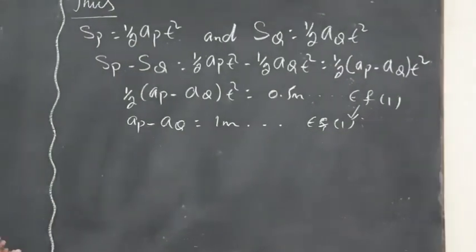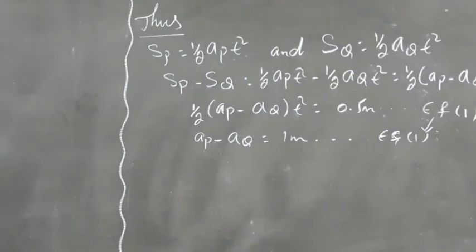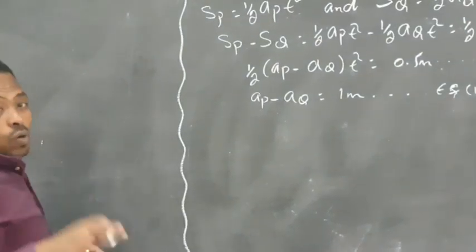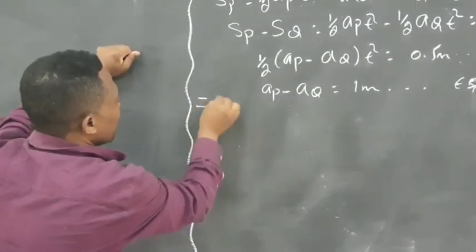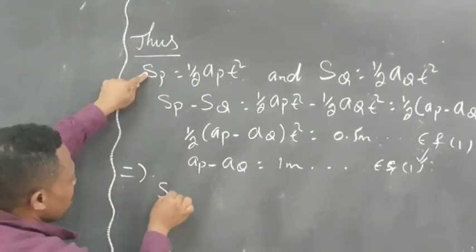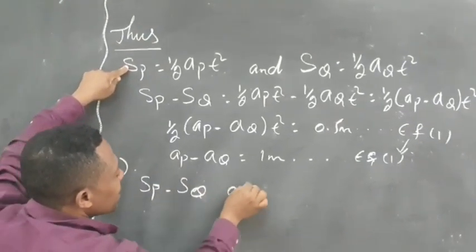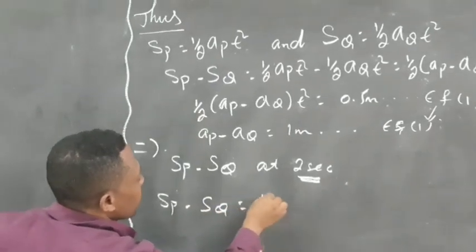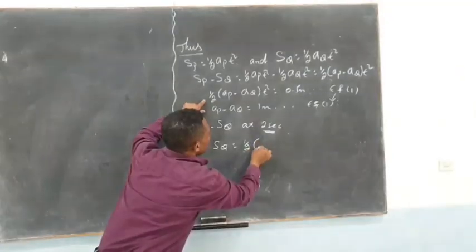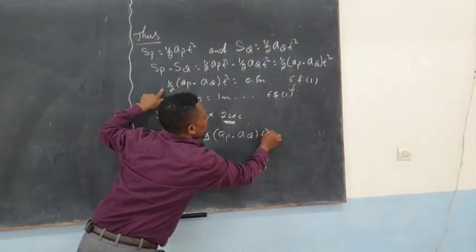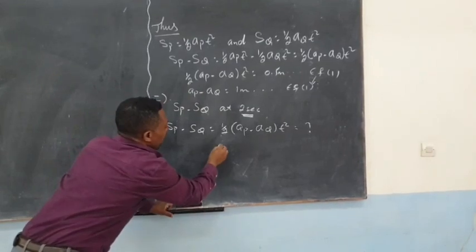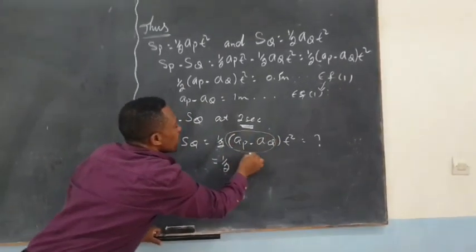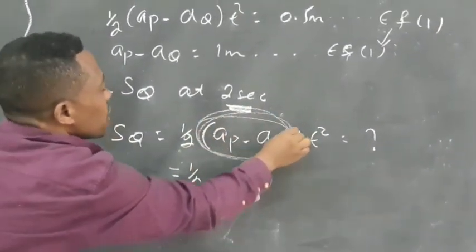So the same principle is true. We are requested to find the distance between particle P and particle Q at the end of 2 seconds. To do so, what we have to do, we have to follow the same pattern. S of P minus S of Q at the end of 2 seconds is equal to half (A P minus A Q) t squared.